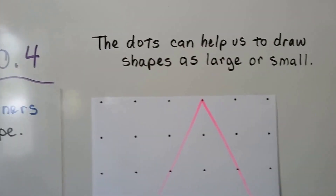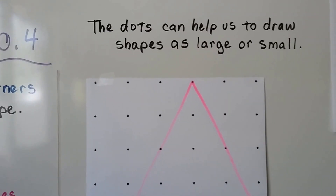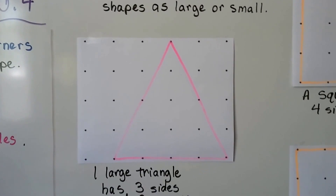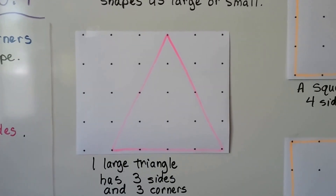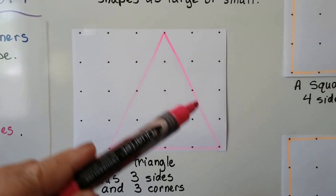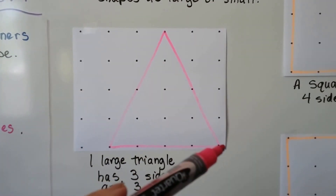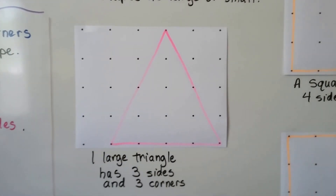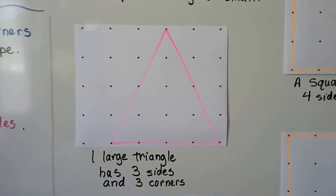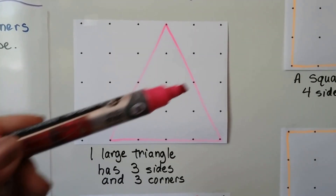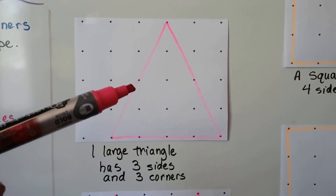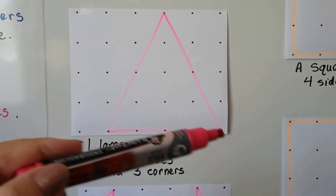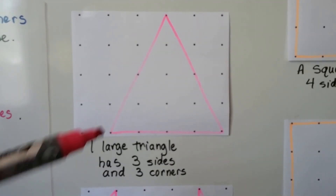The dots can help us to draw the shapes large or small. Here I made one large triangle. I went way up here and went all the way down to this corner, to this corner, and then back up again. We can see it has three sides — one, two, three — and three corners — one, two, three corners.